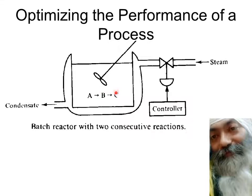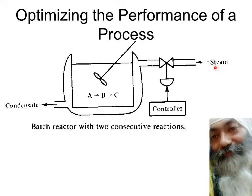Because if B gets converted into C, C is the waste product. A is the raw material — we want to minimize this. B is the main product — we want to maximize this. C is the waste product — we want to minimize this. At the same time, the more steam we use, the more money that goes in. So we want to minimize the steam as well.